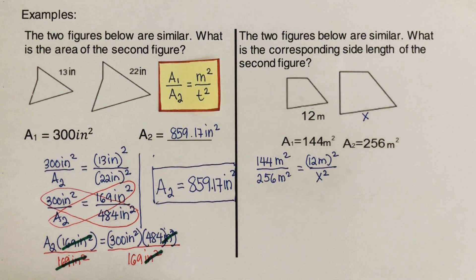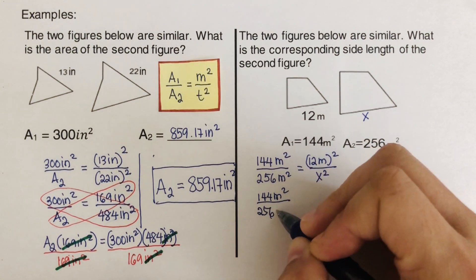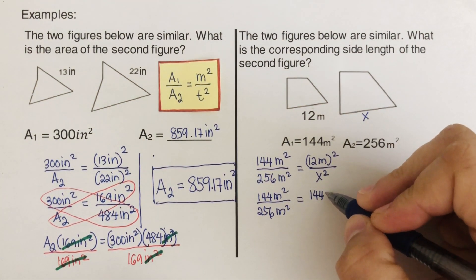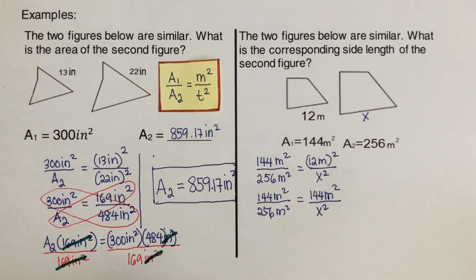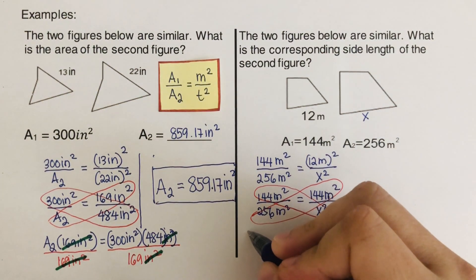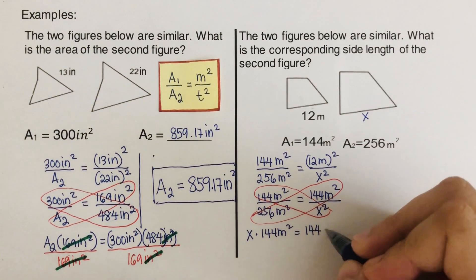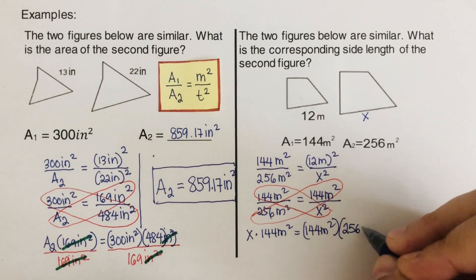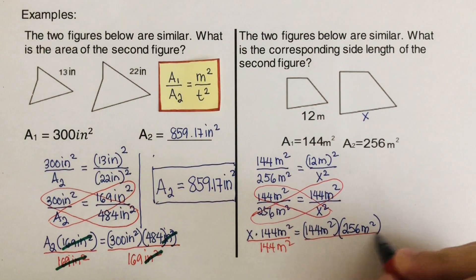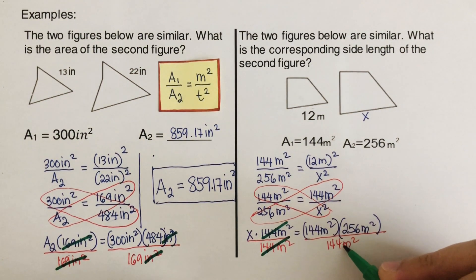Let's simplify 12 squared first. So we have 144 meters squared over 256 meters squared equals 144 meters squared over x squared. Then we cross multiply: x squared times 144 meters squared equals 144 meters squared times 256 meters squared. Dividing both sides by 144 meters squared, we cross out 144 and 144, and the meters squared units cancel.